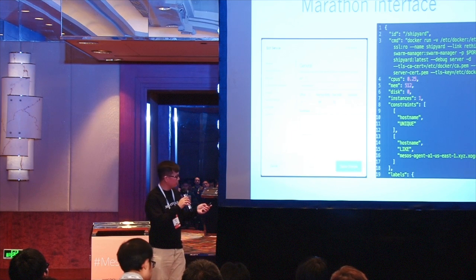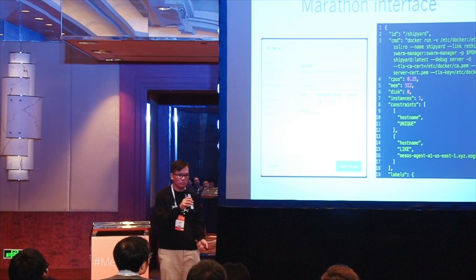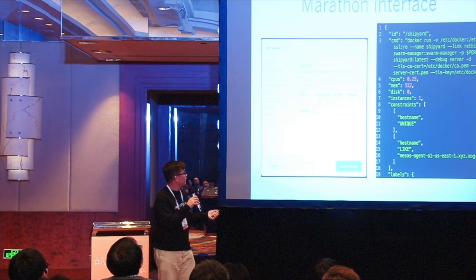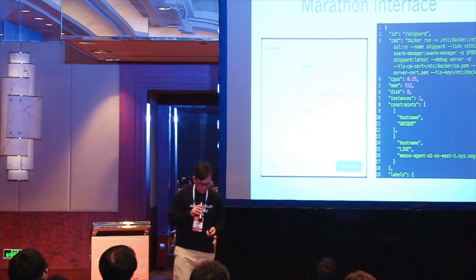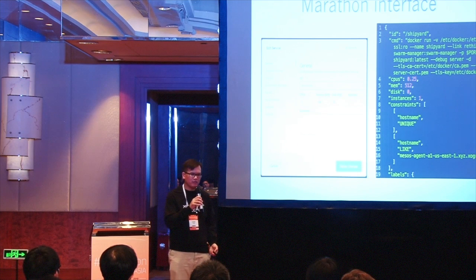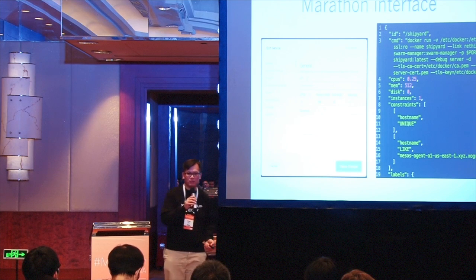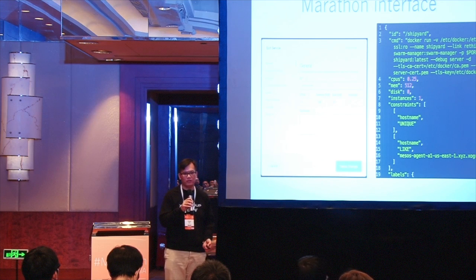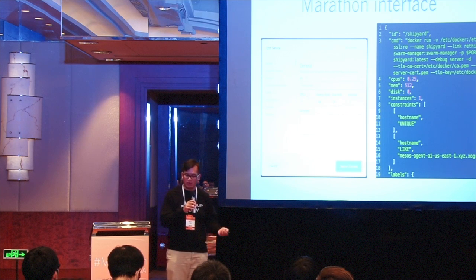Some of it has to do with the Marathon interface — it's a little clunky. These are your two choices when deploying containers using Marathon: either this UI or you're sending a giant amount of JSON. Which isn't the end of the world, but at the same time our developers would now have to learn another interface. And it's not specifically against Mesos — they would have to do the same thing with Kubernetes.